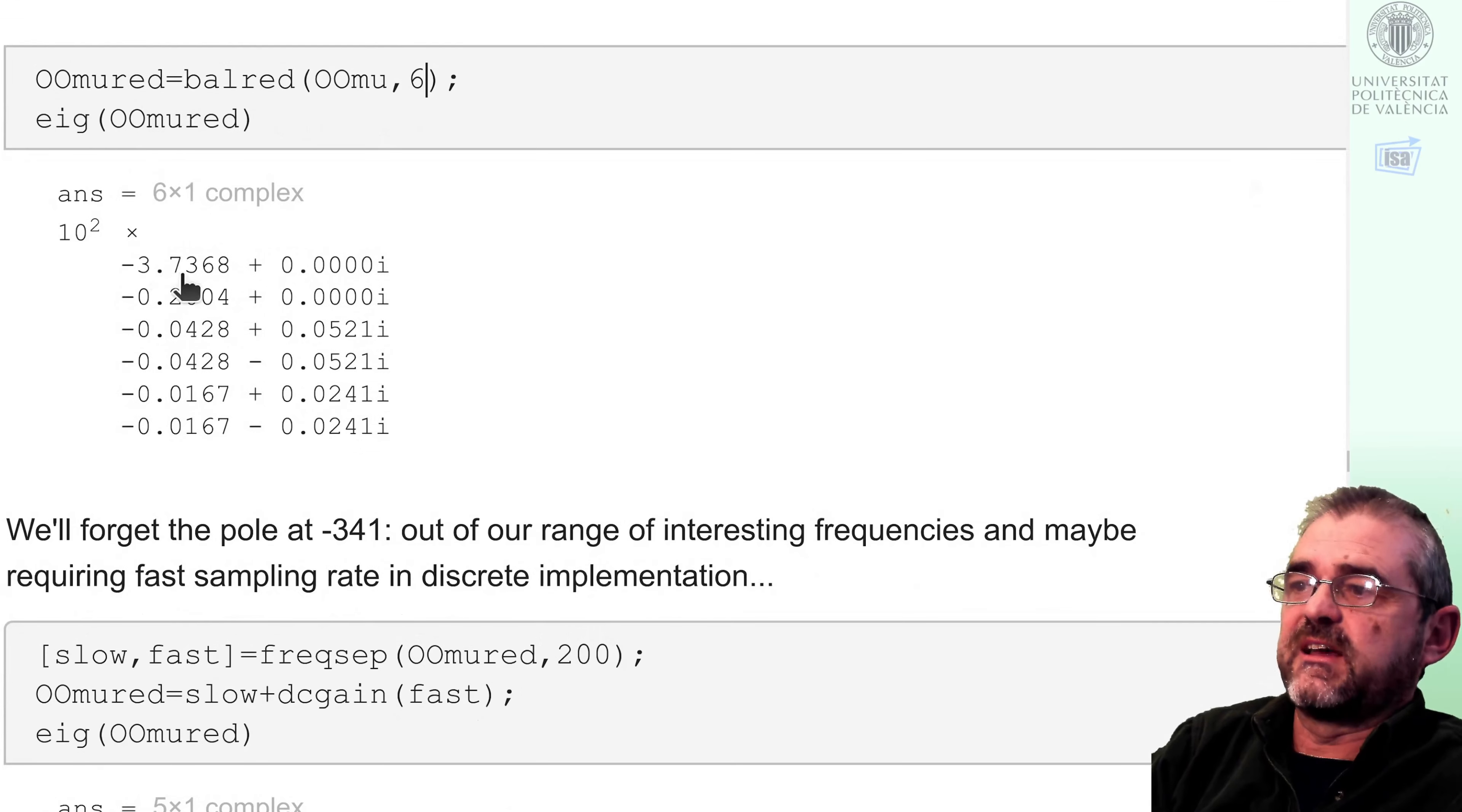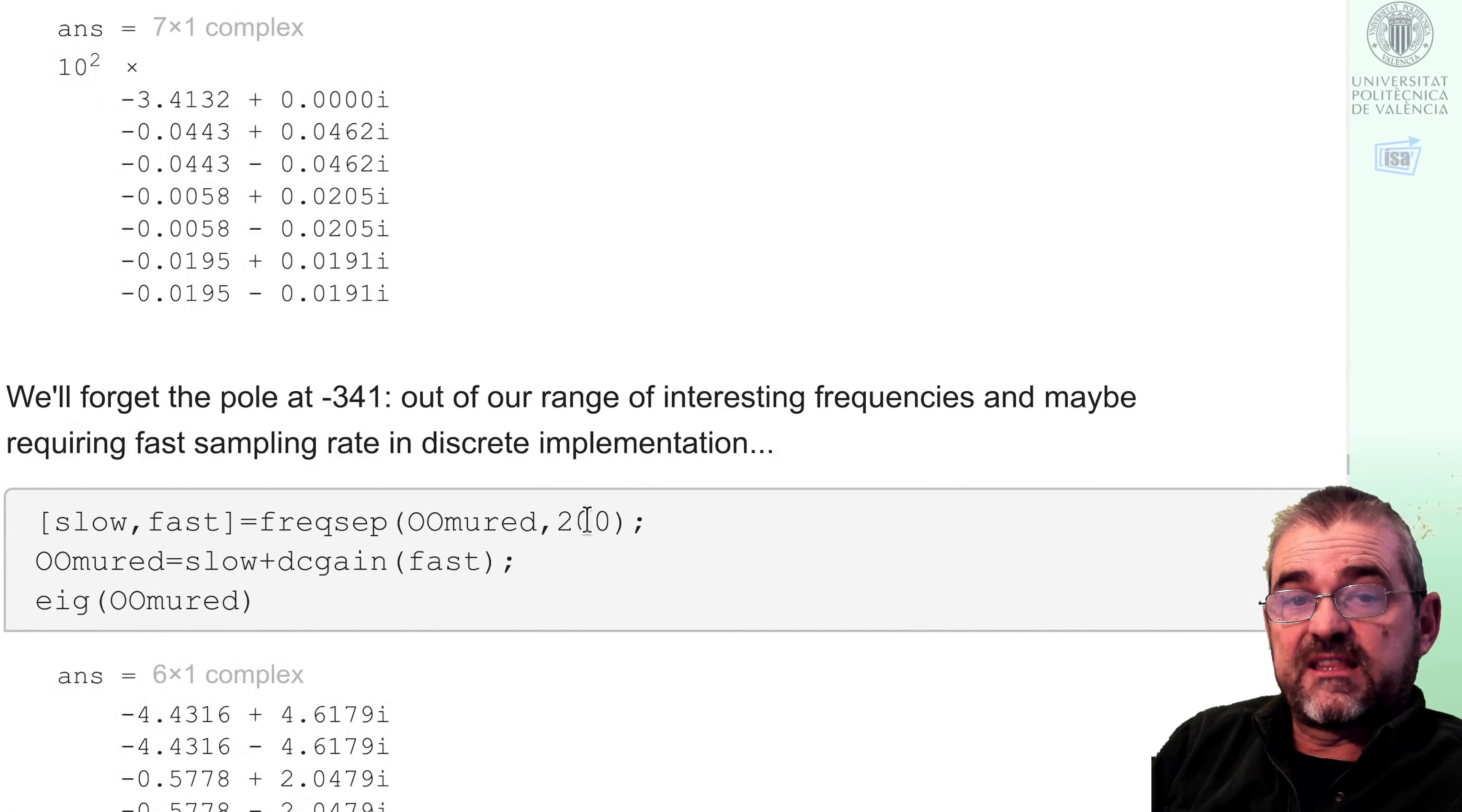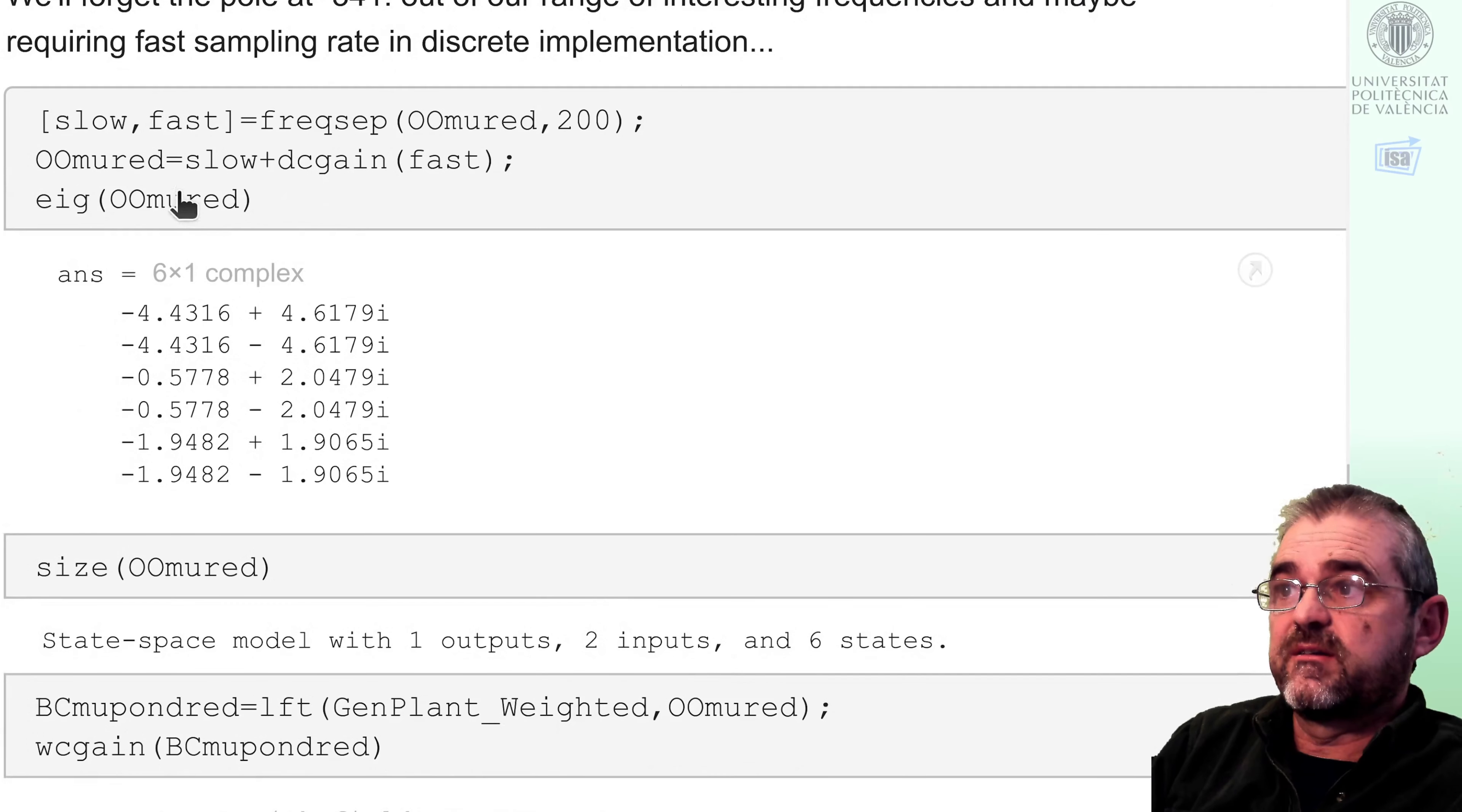Anyway, if I reduced this to order six, and I delete also the pole at minus 374, then now the worst-case gain is 10. So now we indeed have eliminated from the dynamic something which actually was very important. So we'll be back to order seven plus elimination of fast pole with cutoff frequency 200, yielding a sixth order observer.